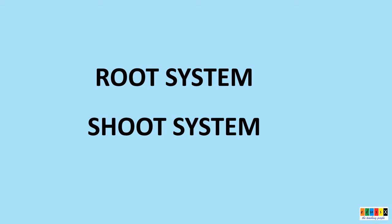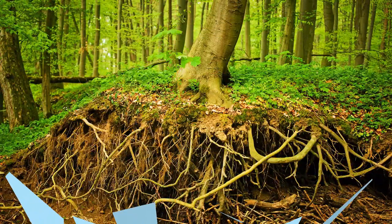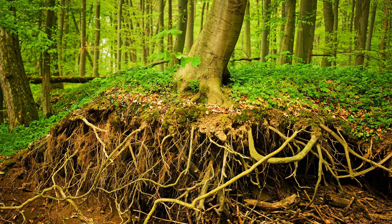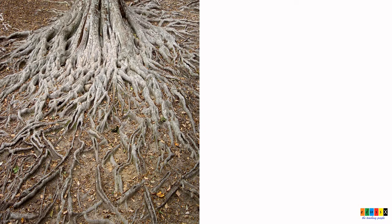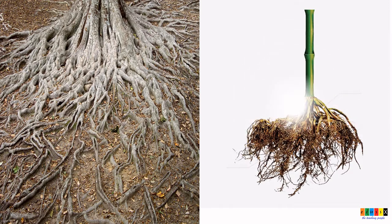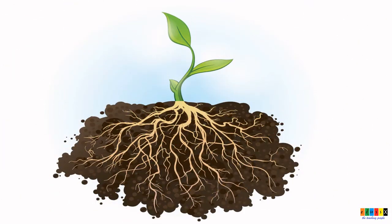First, when we come to the systems, that is the root system and shoot system. What is the root system? The underground part of the main axis of a plant is known as the root. This lies under the surface of the soil. When we look into the root, it has no nodes and internodes. It has a root cap at the tip, and the root hair is found just above the root tips. These are positively geotropic in nature and they grow towards the ground.